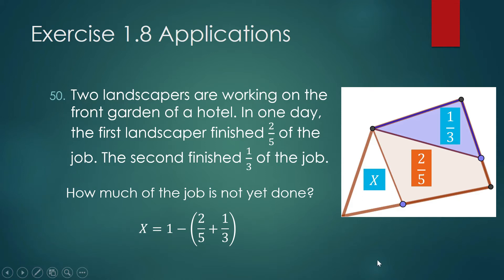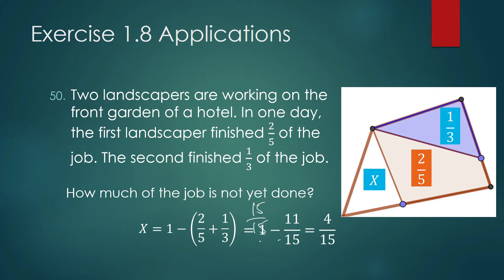So we will remove that from one, and the answer is four over 15. When you see something like 1 minus 11 over 15, write one as 15 over 15 — that makes the subtraction easy because you have a common denominator. You just copy it and then 15 minus 11 is 4.